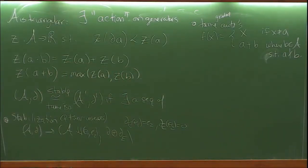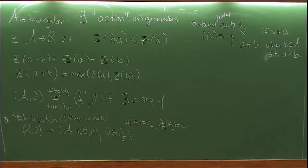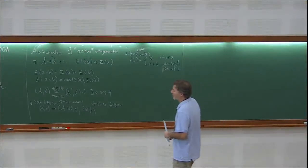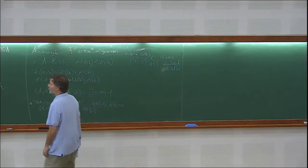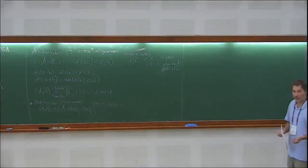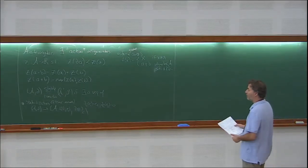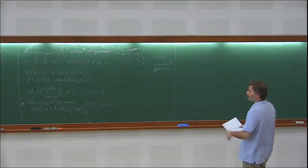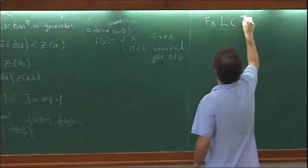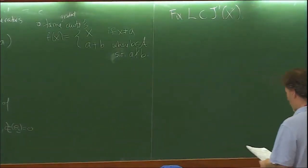How do we construct this DGA from our geometric input? I'm going to define it really for our main example, the one-jet space, though you could try to define it for a general Legendrian in a general contact manifold and see how far you get before something might go wrong. It certainly works for this main example. So let's fix a Legendrian in the one-jet space of some smooth manifold.